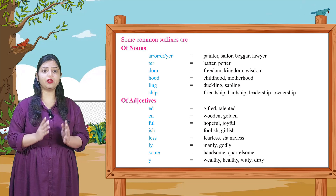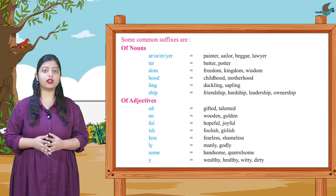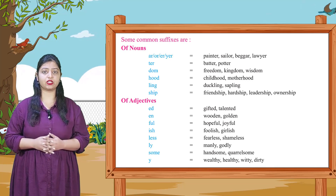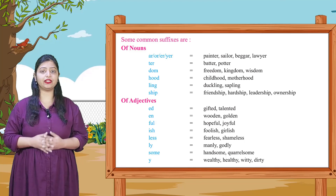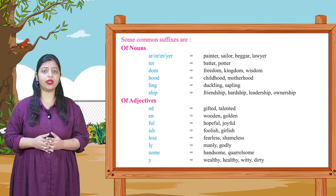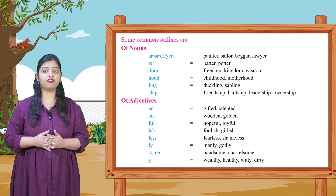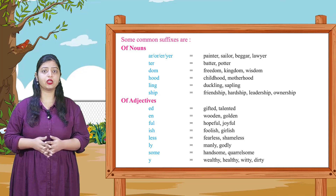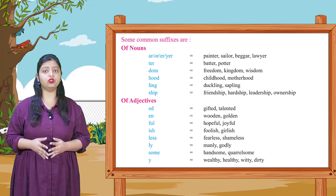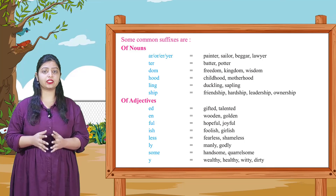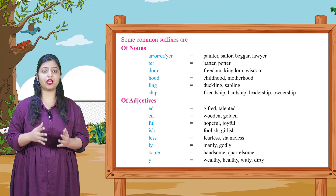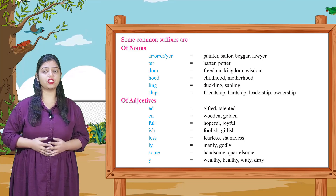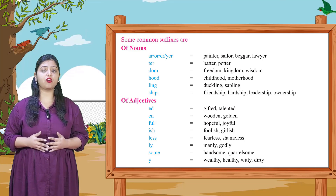Some common suffixes of nouns: -r / -er / -yer: painter, sailor, beggar, lawyer. -ter: batter, potter. -dom: freedom, kingdom, wisdom. -hood: childhood, motherhood. -ling: duckling, sapling. -ship: friendship, hardship, leadership, ownership.